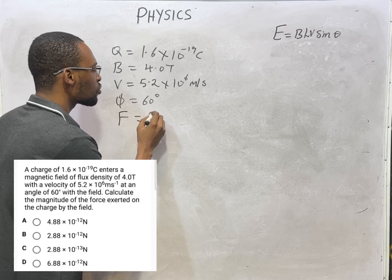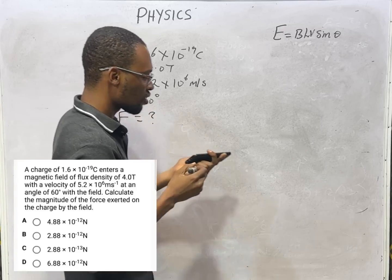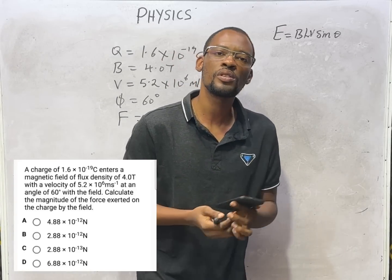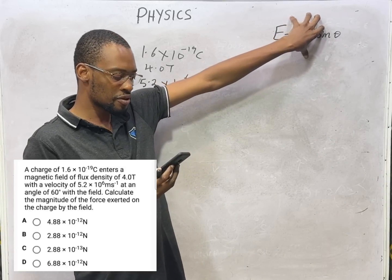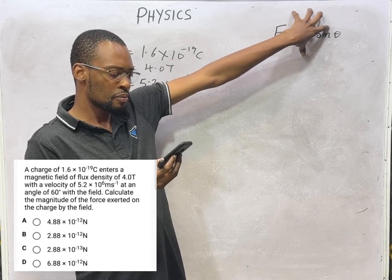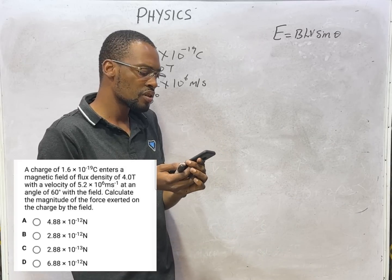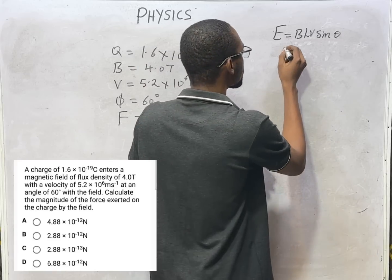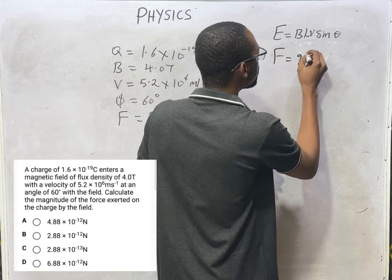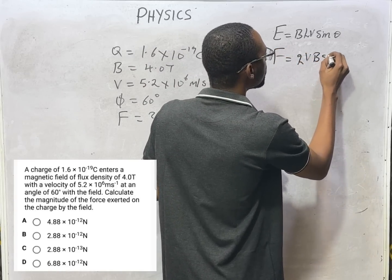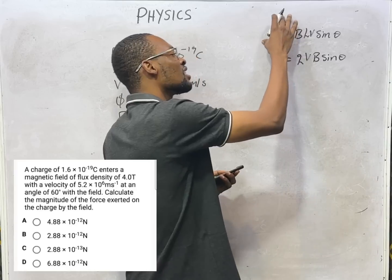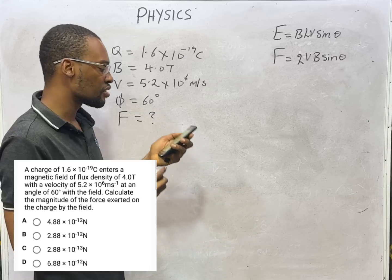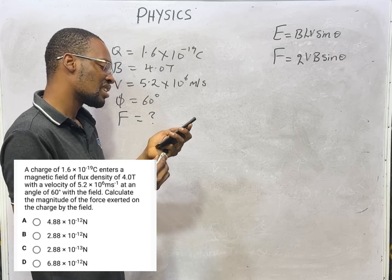The previous question in the previous episode we solved for induced EMF. Here we are looking for the magnitude of the force. Force is F = qvB sinθ. EMF is Bnv sinθ, force is qvB sinθ - they are basically very similar and simple.